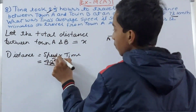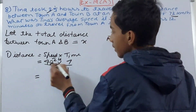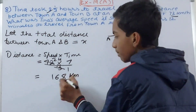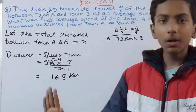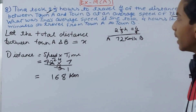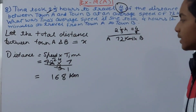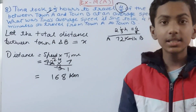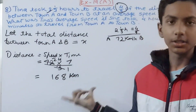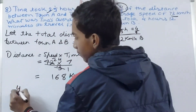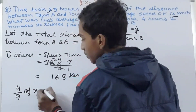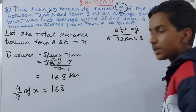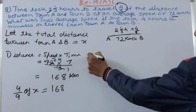Solving: 72 × 7/3 — cancel 72 and 3: 24 × 7 = 168. So the distance is 168 kilometers. Remember, this is not the total distance between Town A and B, but the distance Tina travels. We know she has traveled 4/9 of the total distance, so we can say: 4/9 of x = 168.